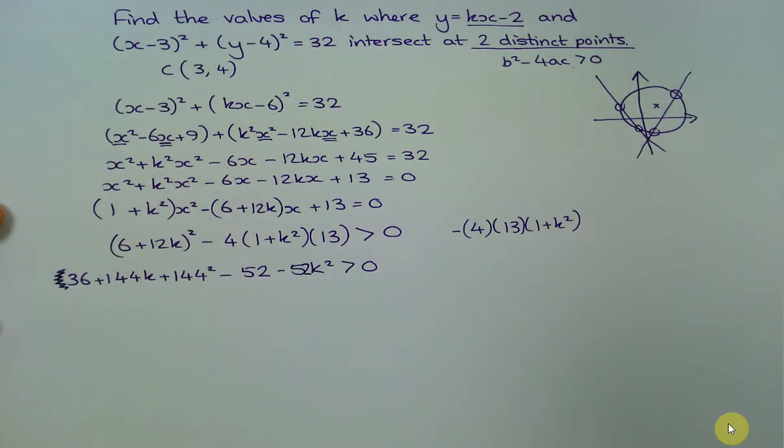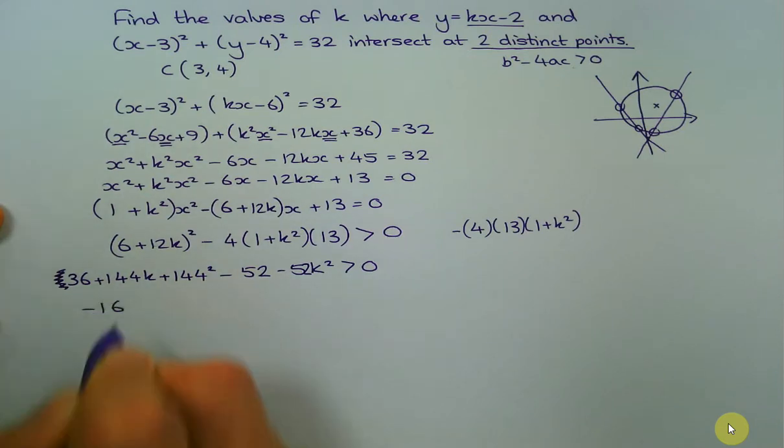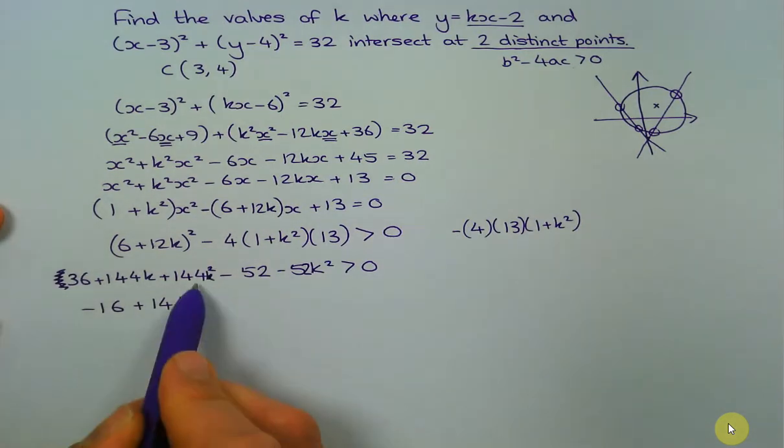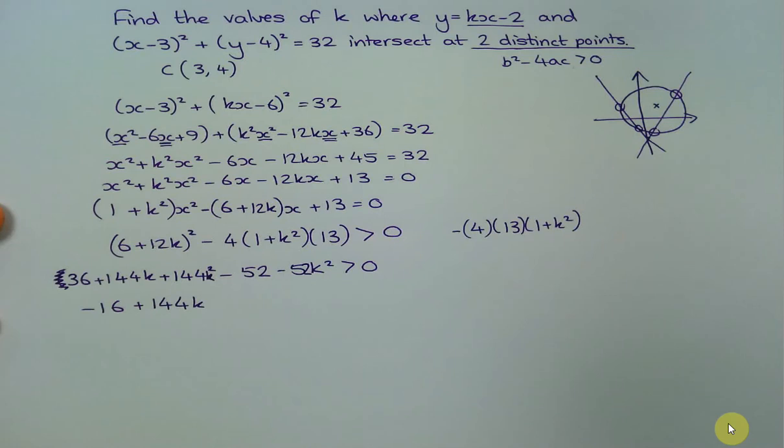Now just collect like terms. So what's 36 take away 52? I can't believe I just typed that into my calculator, but I just did. We haven't got any more k's. And that should be a k², I do apologize. And 144 take away 52, that's 92.